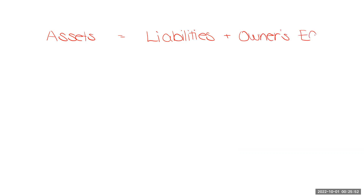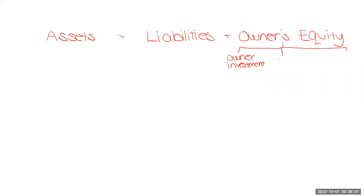So there's our basic accounting equation. Let's expand first the equity section. We said we're going to have our owner investments, and right now I'm not going to the corporate terminology just yet. We're going to have our dividends, or our drawings, or withdrawals — whatever you want to call that — drawings, revenue, and expenses. We'll just start simple.